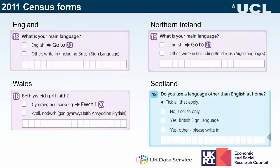The questions asked in England, Northern Ireland, and Wales in the 2011 census were all the same: whether your main language was English, or in Wales, whether it was Welsh or English, and if something else, you were asked to write that language in. In Scotland, a different question was asked: 'Do you use a language other than English at home?' — this doesn't specify a main language, just another language used, so we might expect the results to be slightly different.